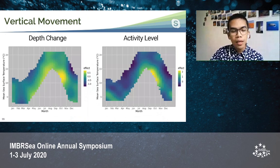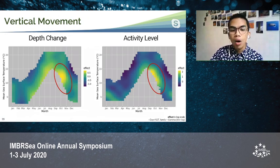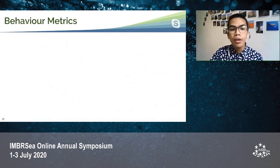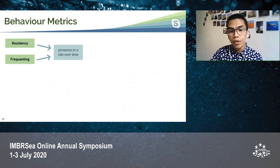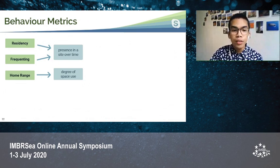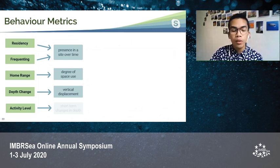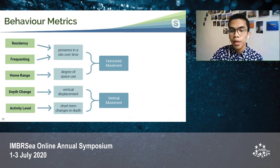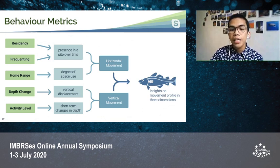For vertical movement, depth change and activity level followed similar patterns, wherein they were highest during autumn, especially in the months of September and October. Residency and frequenting refer to the presence of a fish at a site over time, home range is the degree of space use, depth change is the vertical displacement, and activity level refers to short-term changes in depth. Together, residency, frequenting, and home range give an idea of horizontal movement, while depth change and activity level give information on vertical movement. Using both gives an overall view of the movement profile of the fish in three dimensions.